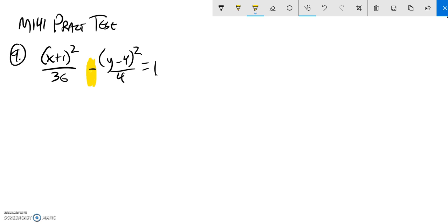I know the center is at negative one, positive four. So here's my point (-1, 4). My offset in the x direction is six, so I'm going to go six in this direction and six in this direction.